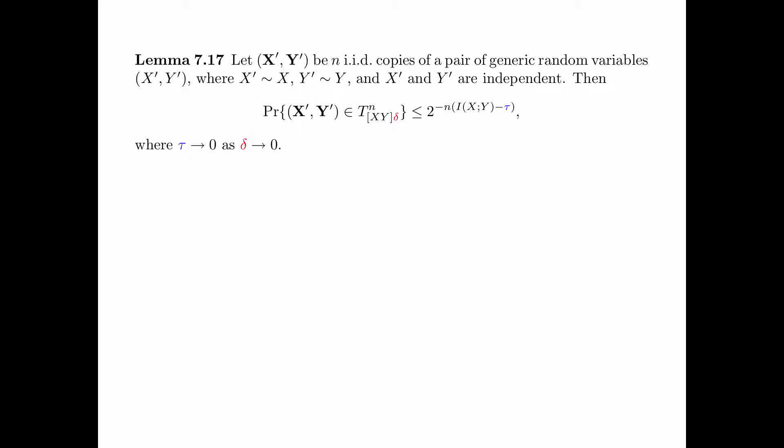Lemma 7.17 is a key lemma for proving the achievability. Let the pair of sequences X' and Y' be n IID copies of a pair of generic random variables X', Y', where X' has the same distribution as X, Y' has the same distribution as Y, and X' and Y' are independent. Then the probability of the pair of sequences X', Y' being jointly typical with respect to X and Y is less than or equal to 2 to the power of minus N times I(X;Y) minus tau, where tau tends to 0 as delta tends to 0.